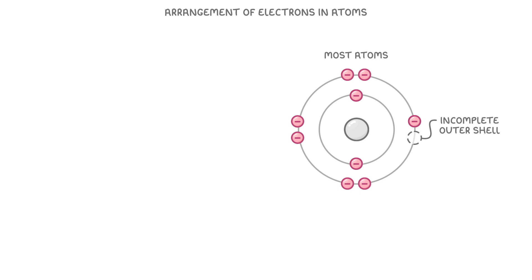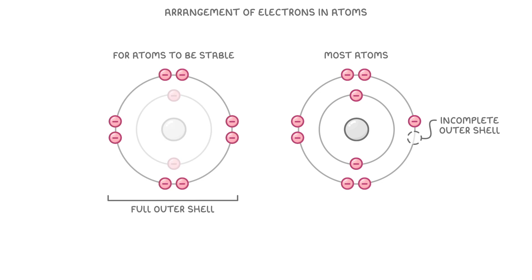This is a really key point in chemistry, because in order for atoms to be stable, they need to have a full outer shell. And if they don't, then they'll have to react with another atom to gain or lose the electrons that they need.